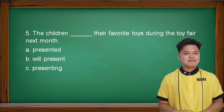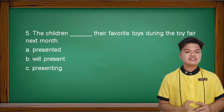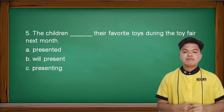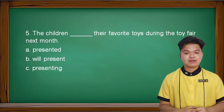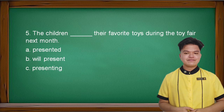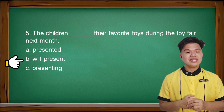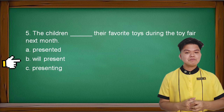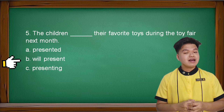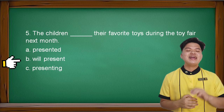Last number: the children blank their favorite toys during the toy fair next month. A: presented, B: will present, or C: presenting. The answer is 'will present' — the children will present their favorite toys during the toy fair next month. It is in future tense because it will happen next month.